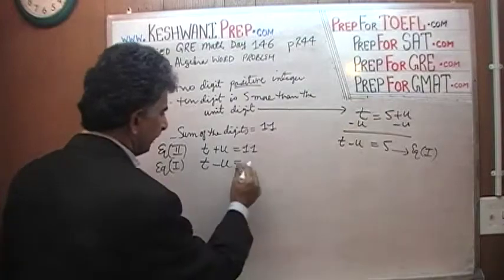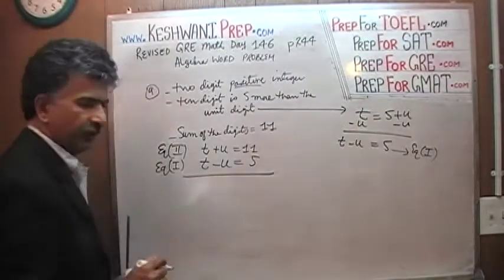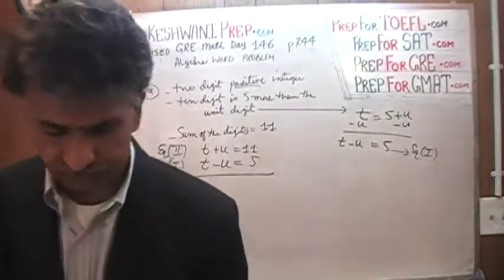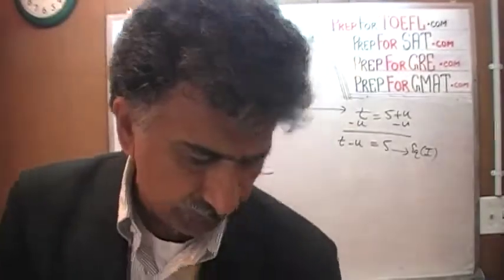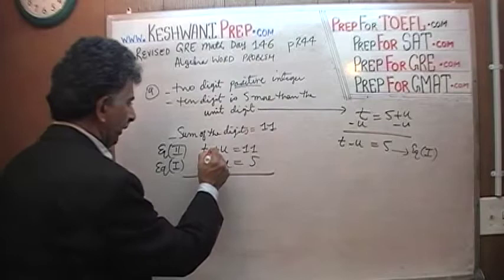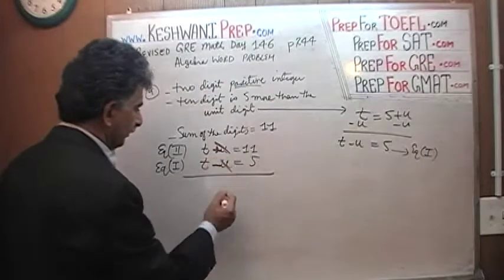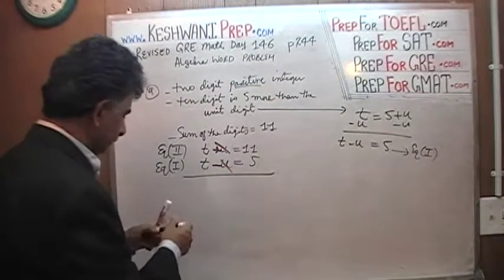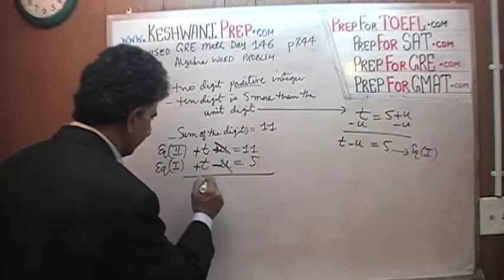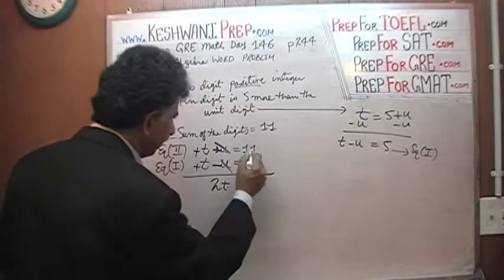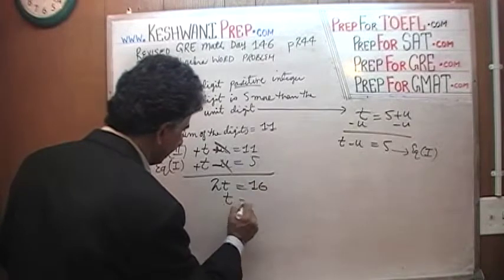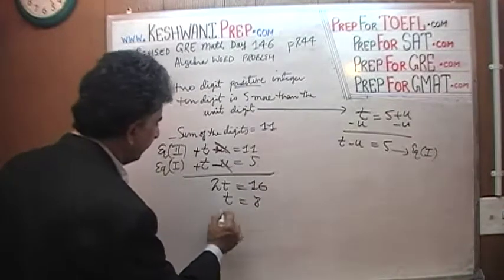This is a very simple, straightforward problem because we have two simple equations — one represents the sum, the other represents the difference. Here we have a positive U and a negative U; U cancels out. We end up with 2T equals 11 plus 5, which is 16. That means T equals 8.